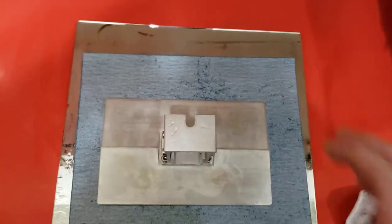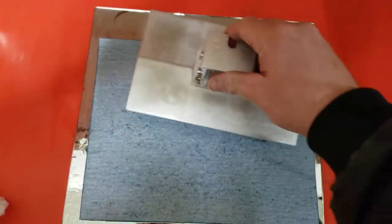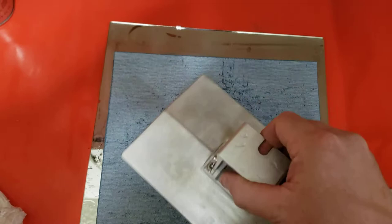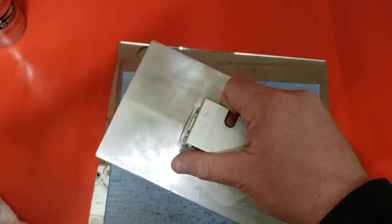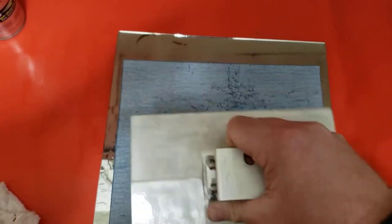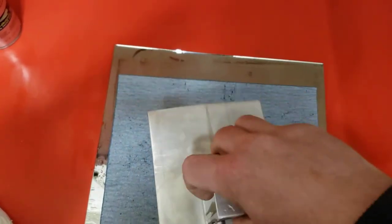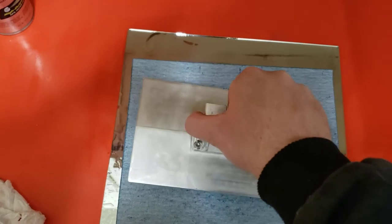You want to sand in orbital directions. Don't do one direction constantly, just go in different directions - 45s, up and down, this way, then switch around. Make sure you have even pressure all the way around.